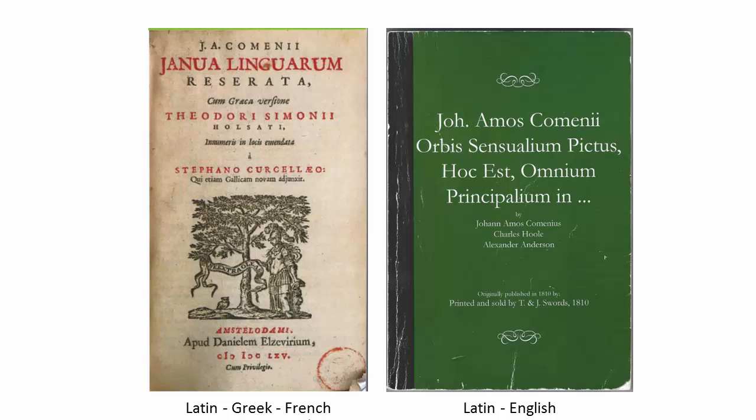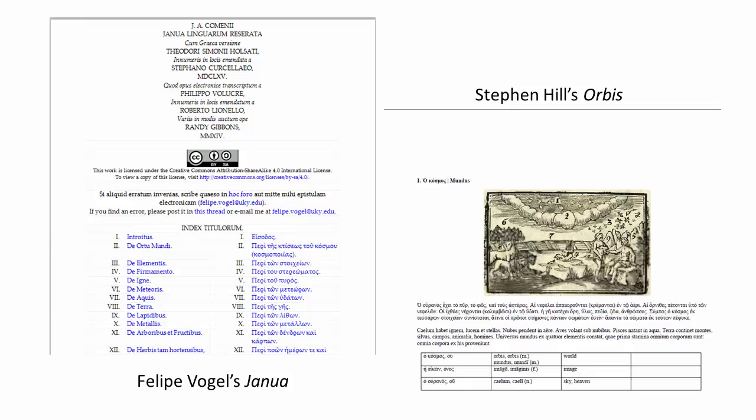the Janua and the Orbis have the double benefit of having been translated during Comenius' lifetime into ancient Greek, so they also serve as a gold mine of Greek vocabulary and of Latin-Greek equivalence. They would be even more valuable today if they were easily accessible — in media and in fonts we're comfortable with in the 21st century — which they weren't, but are now thanks to Felipe Fogel and to Stephen Hill. Felipe has transcribed the entire Janua, Latin and Greek, into Microsoft Word, and Stephen has done the same for the entire Orbis Pictus, both monumental achievements. A shout out also goes to Roberto Lionello for proofreading and helping explicate these texts, and to Evan Milner for his Latin recording of the entire Orbis Pictus, which acquainted many of us with Comenius in the first place.